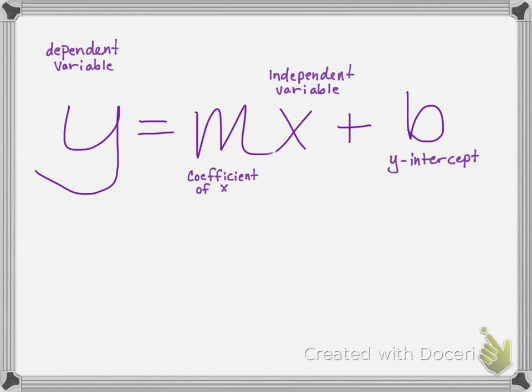So to start off, we've got the dependent variable. That's going to be your y right here. Dependent variable is basically what we're trying to solve for. So if we change our independent variable, how is that going to affect the dependent variable?